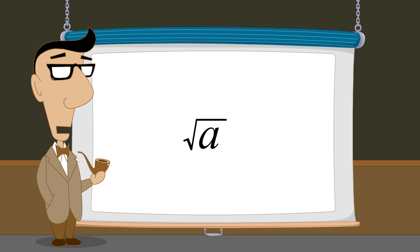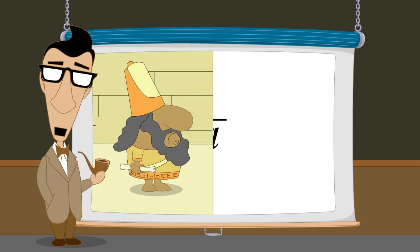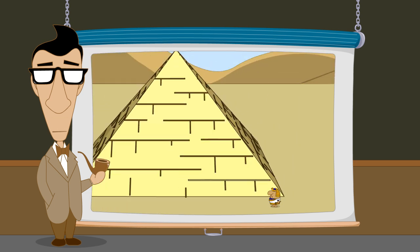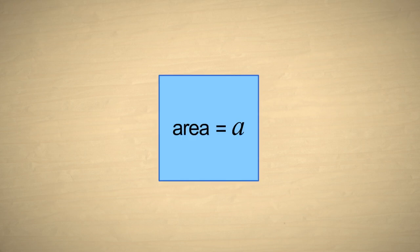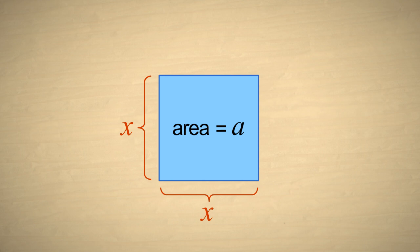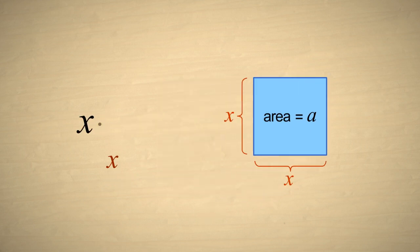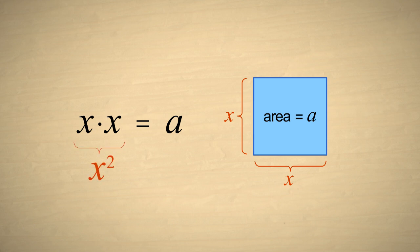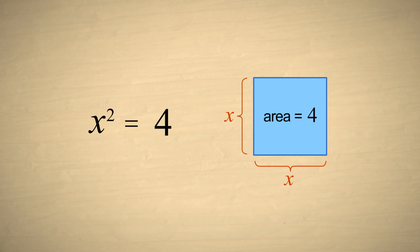The idea of square roots has been around for a long time. Both the ancient Babylonians and the ancient Egyptians knew about square roots. If you want to construct a square object with a particular area, you need to know what length to make the sides. If we call the length of a side x and the area of the square a, we know that the length x when multiplied by itself is equal to a. So the problem is to find what value of x, when squared, gives us a. For example, if we wanted an area of four square meters, by trial and error we could figure out that the side of the square must be two meters. We say that two is the square root of four, since when we square the number two, we get four.